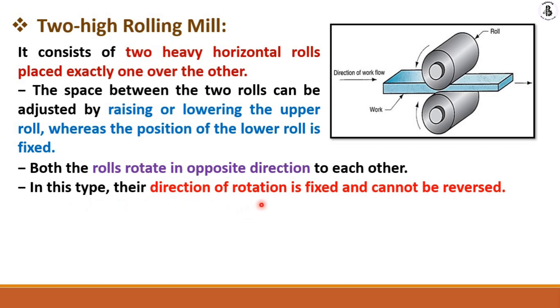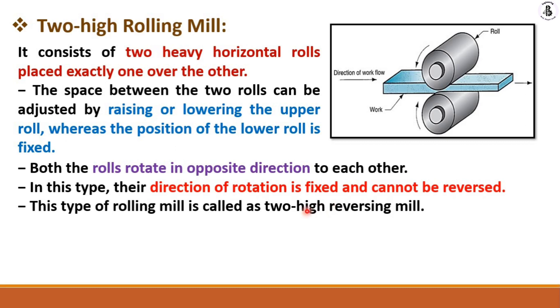In this type, the direction of rotation is fixed and cannot be reversed. This kind of rolling mill is called a two-high reversing mill.